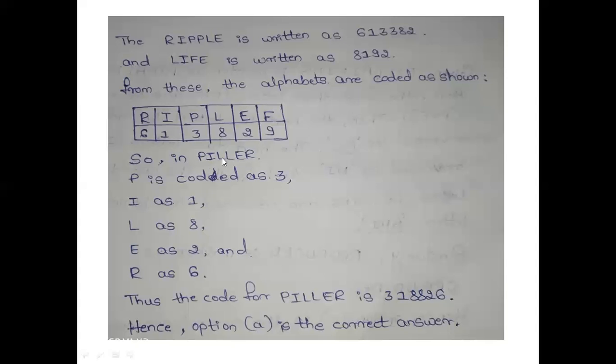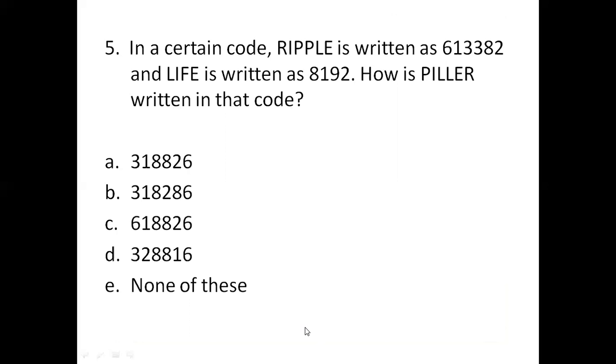Next, L. The next letter is L. So, L is 8, L is 8. E is 2 and R is 6. Thus, the code for pillar is 318826. Hence, option A is the correct answer.